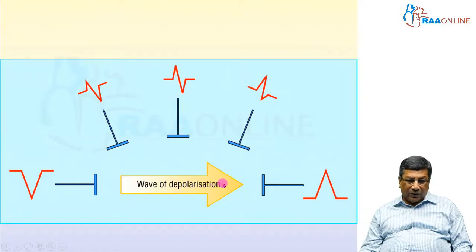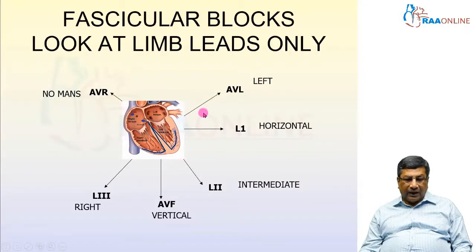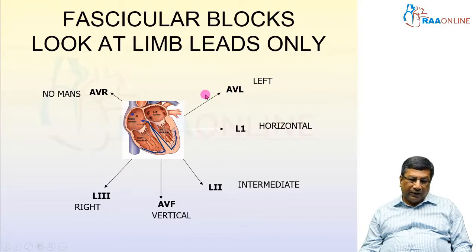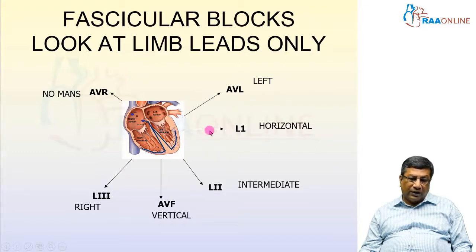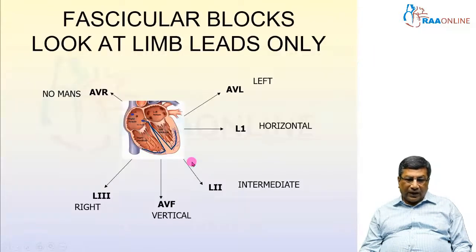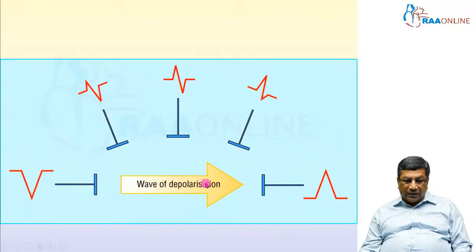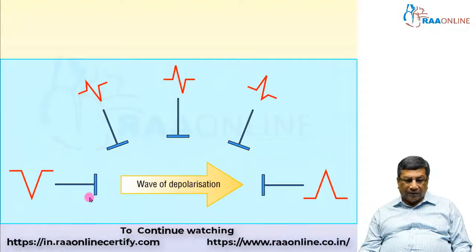Just like bundle branch blocks, fascicular blocks produce abnormal ventricular depolarization. In bundle branch block you concentrate on QRS predominantly in the chest leads, whereas to diagnose fascicular blocks you concentrate on QRS in the limb leads, because of the abnormal axis deviation produced. The same principle applies: if ventricular depolarization is coming towards a lead, that lead will record the tallest QRS complex; if it is going away from a lead, that lead will record the deepest negative QRS complex. We apply this same principle to diagnose fascicular blocks.